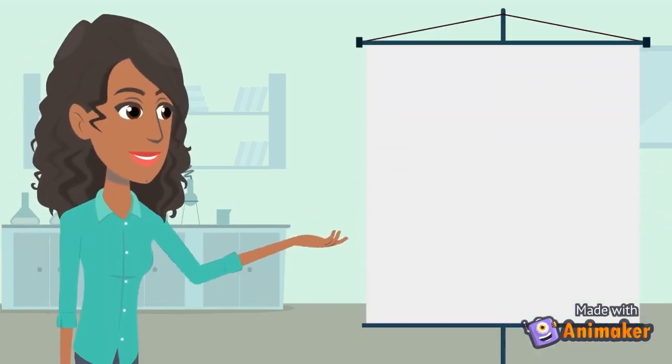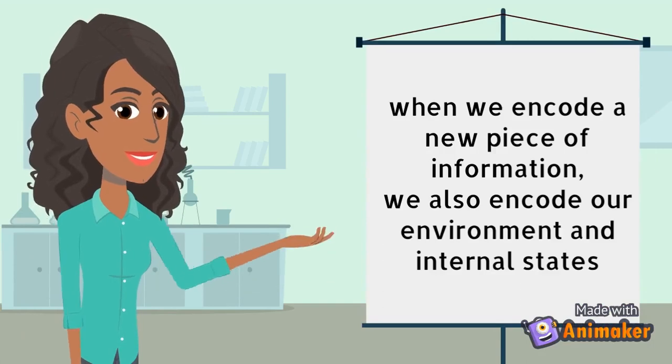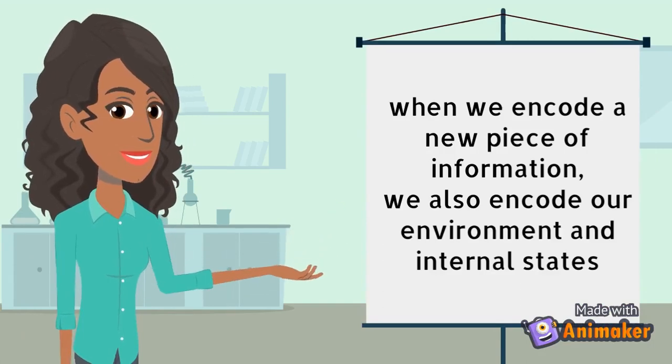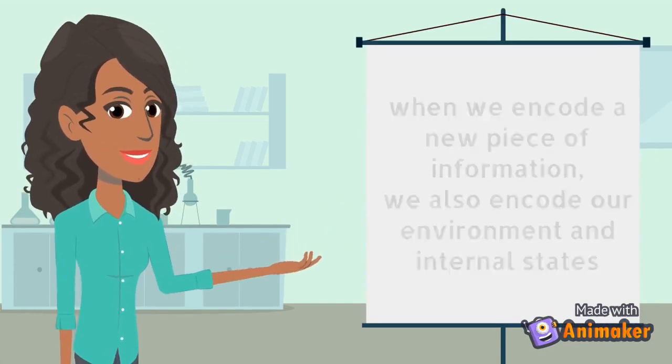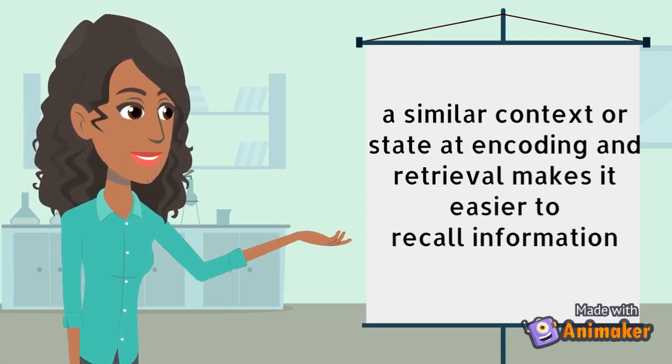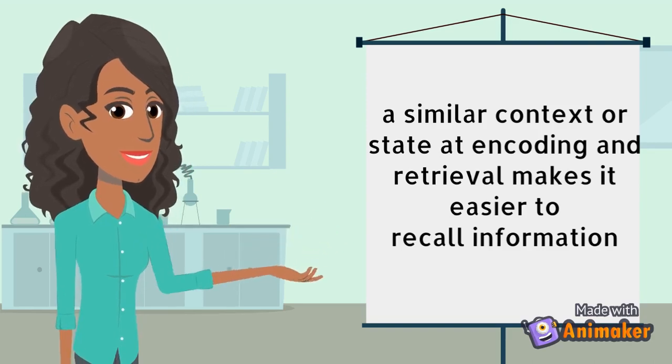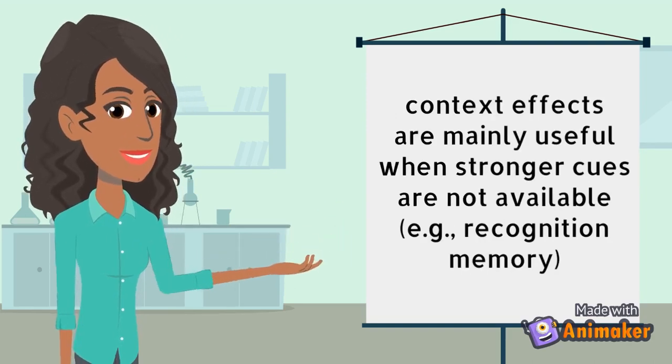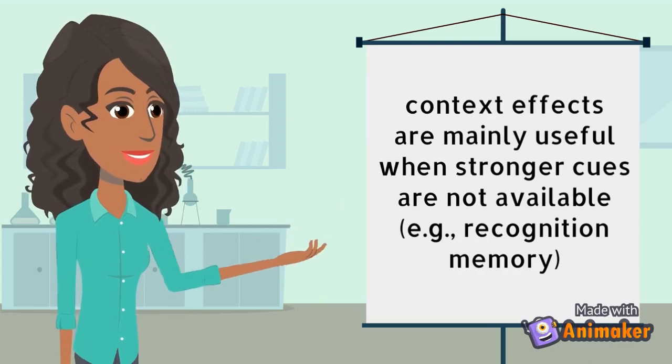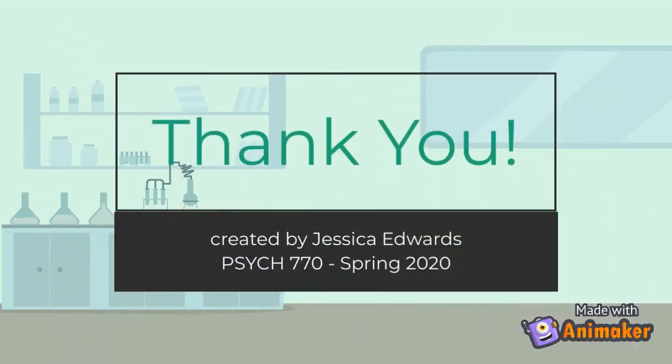In summary, the encoding specificity principle tells us that when we encode a new piece of information, we also encode aspects of the environment and our internal states. Later, being in a similar environment or state can activate your memory for that piece of information, making it easier to recall. However, the outshining hypothesis states that this only happens when other, stronger cues are not available. Thanks for watching this video. I hope you learned something interesting.